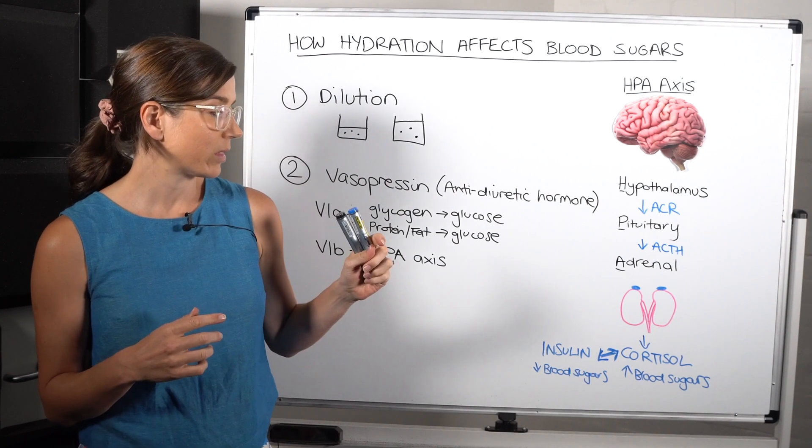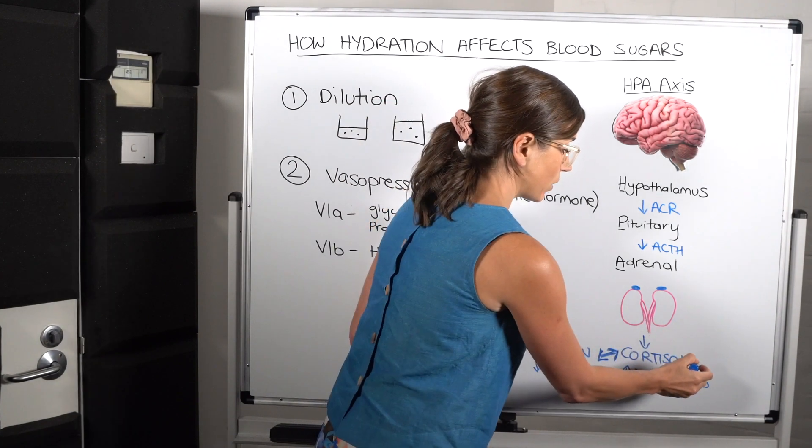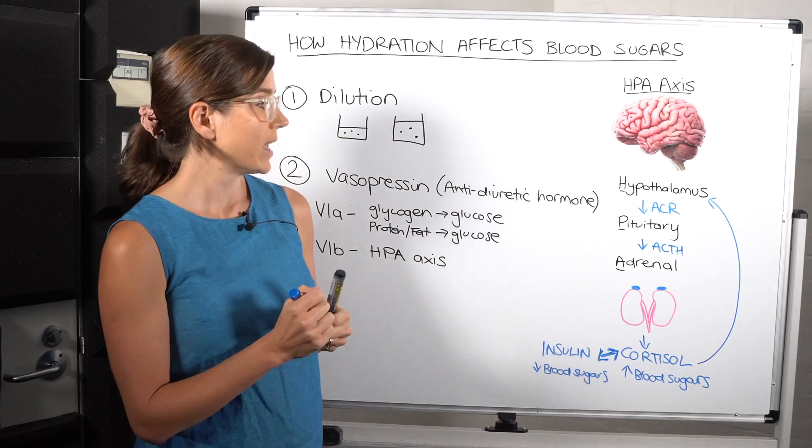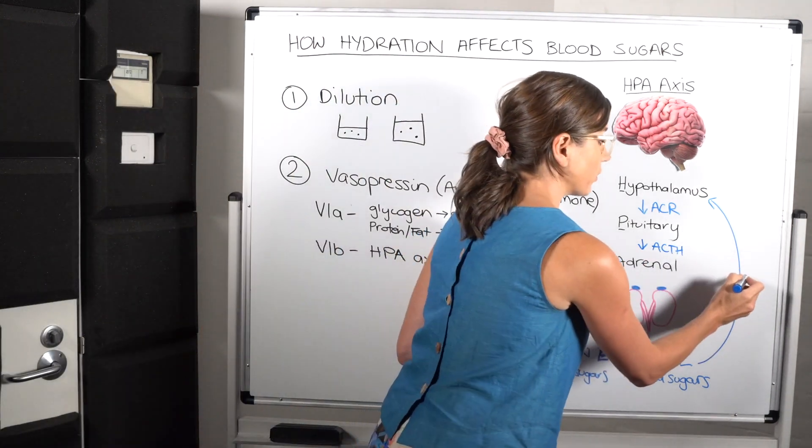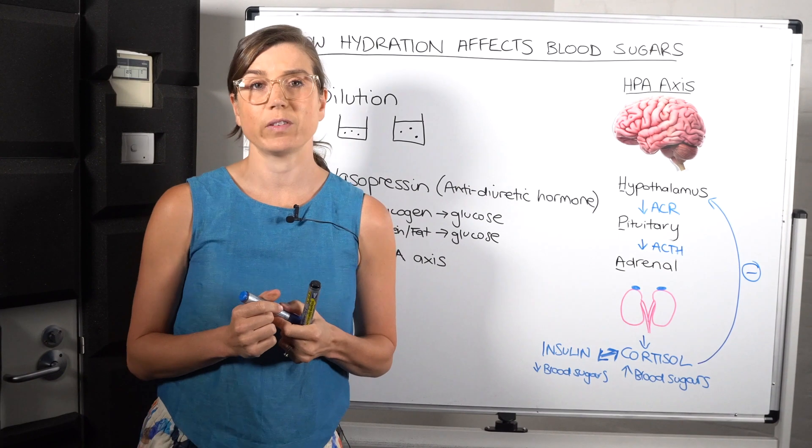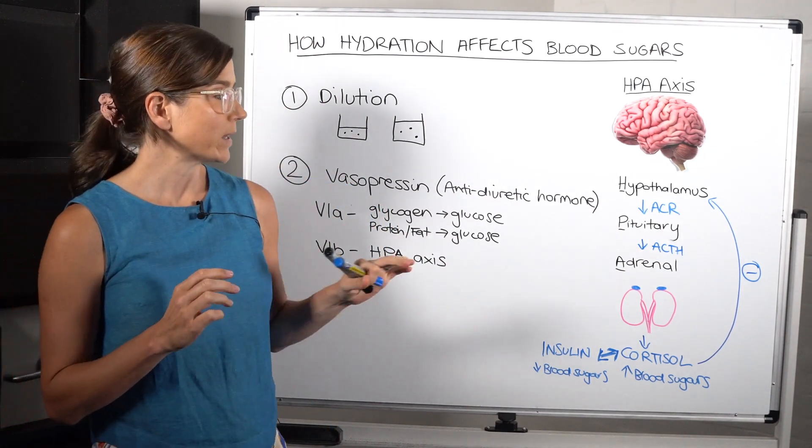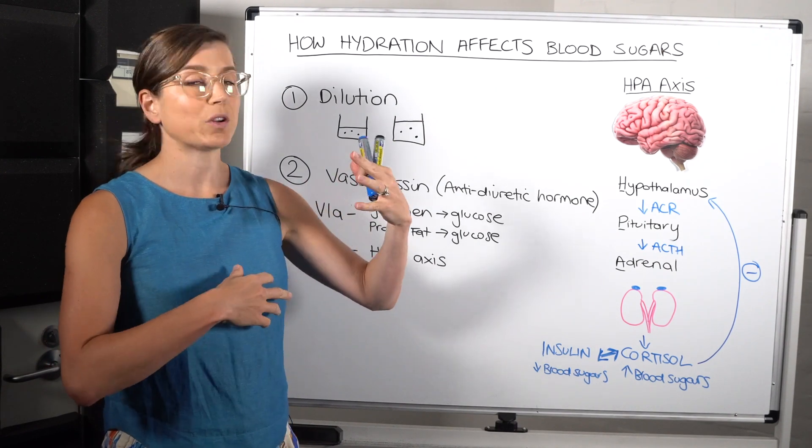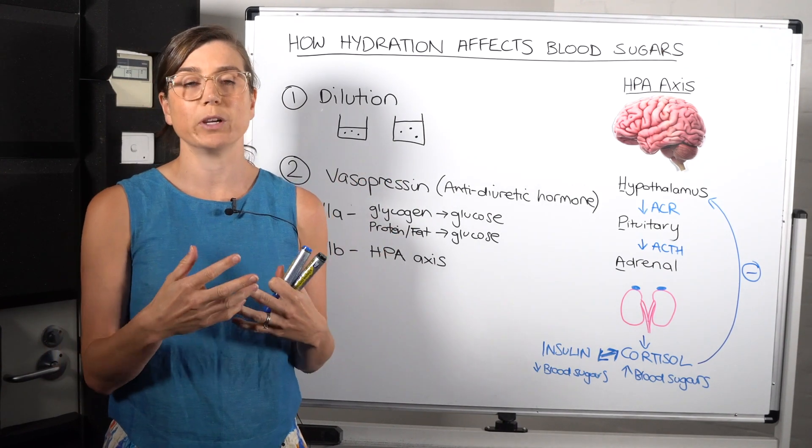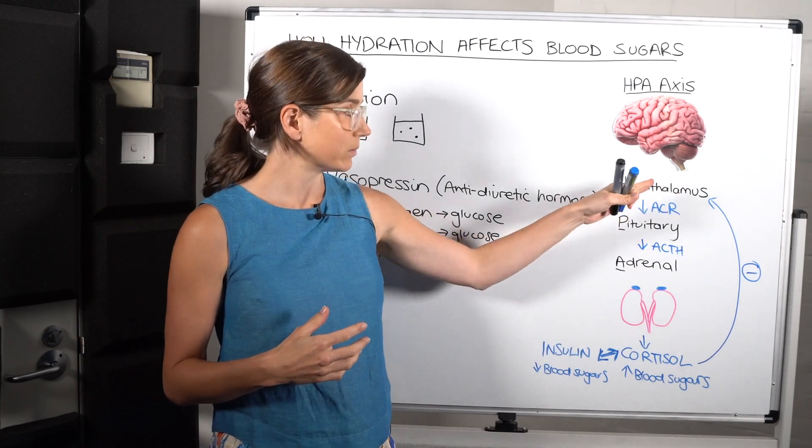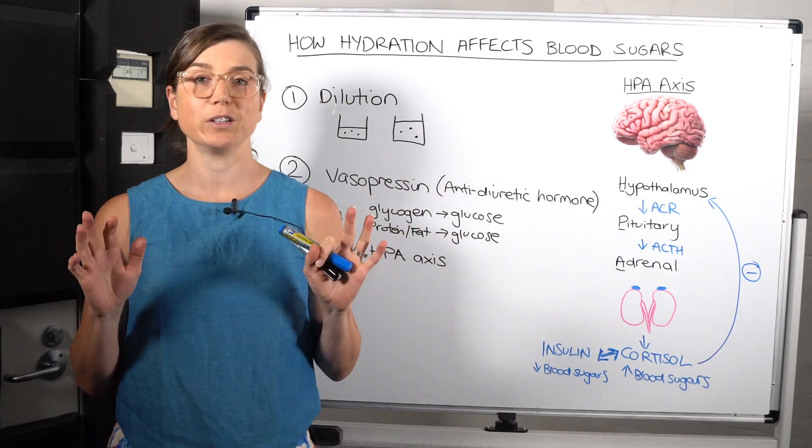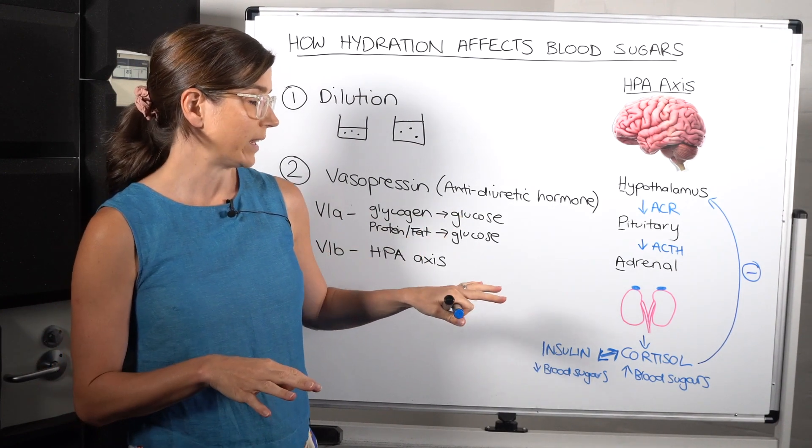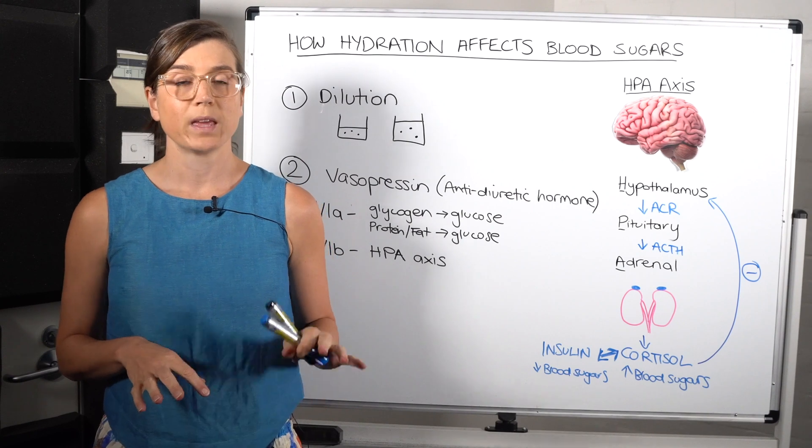And so what happens then is cortisol, when it gets to a certain level, will feed back to the hypothalamus, and it will switch it off. So we call this a negative feedback loop. So once the stress is resolved, and the body then needs to go back to what we call homeostasis. So normally, cortisol will say, alright, everything is fine, you can relax now. So it switches this off, and then cortisol levels will go back to normal.